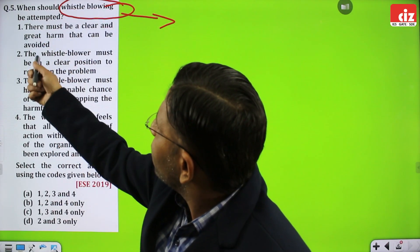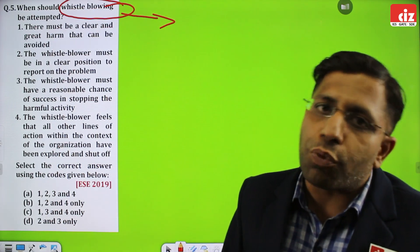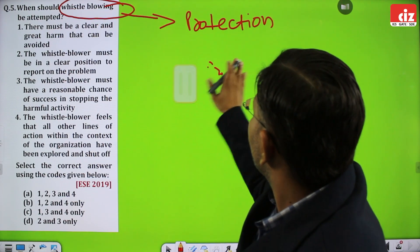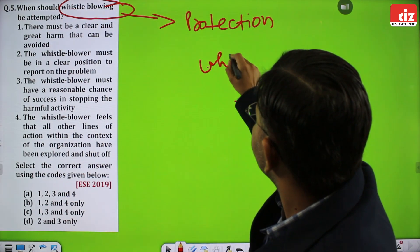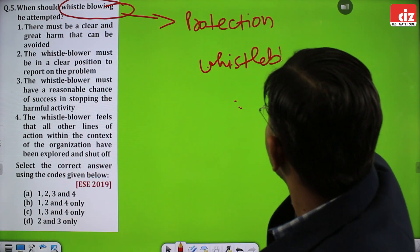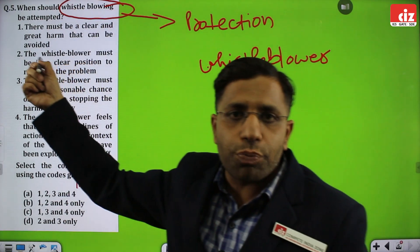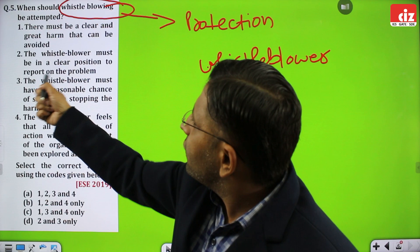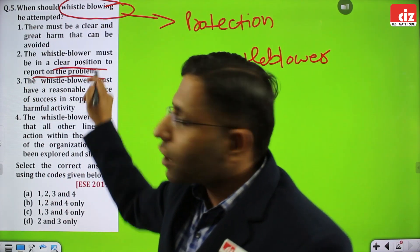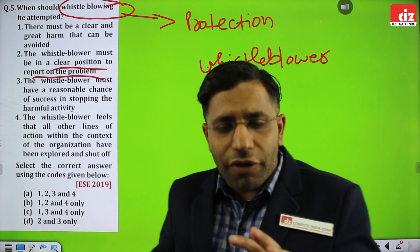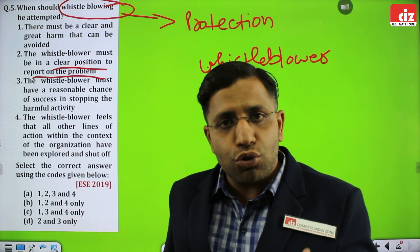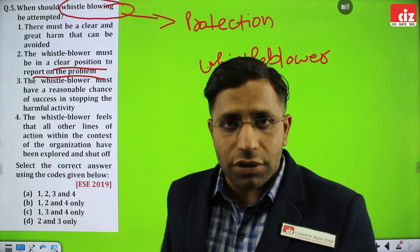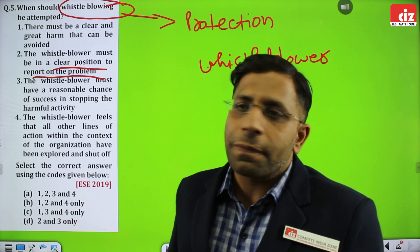The conditions for whistleblowing: first, there must be clear and great harm that can be avoided — protection of the whistleblower is of utmost importance. This first statement completely endorses this. Second, the whistleblower must be in a clear position to report on the problem. A whistleblower cannot take the risk of having only 50% knowledge of whether they are right or wrong — they must have 100% surety. If they are going to bring the problem to the senior authorities' notice, they have to be very clear.